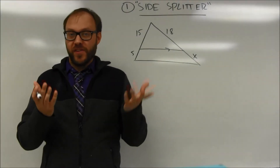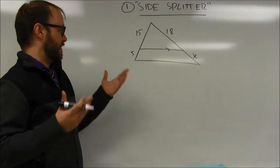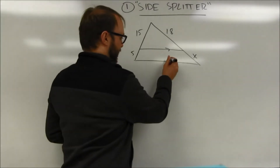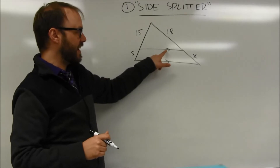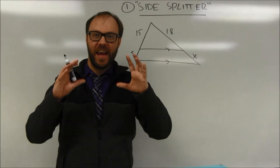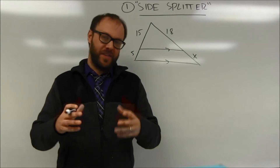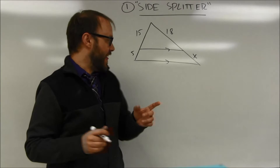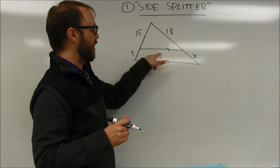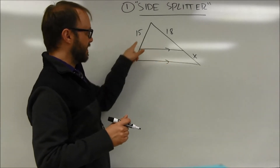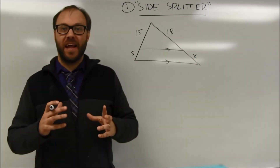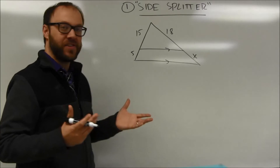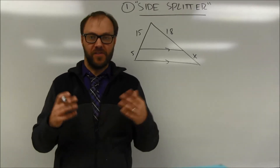We're going to look at the side-splitter theorem. The situation is where you have a line dividing a triangle into parts, and that line has to be parallel to the base — or at least parallel to some side of the triangle. The idea is straightforward: this line is going to divide the left-hand side of the triangle in the same ratio that it divides the right-hand side, and it allows us to set up all kinds of different proportions that can be solved.